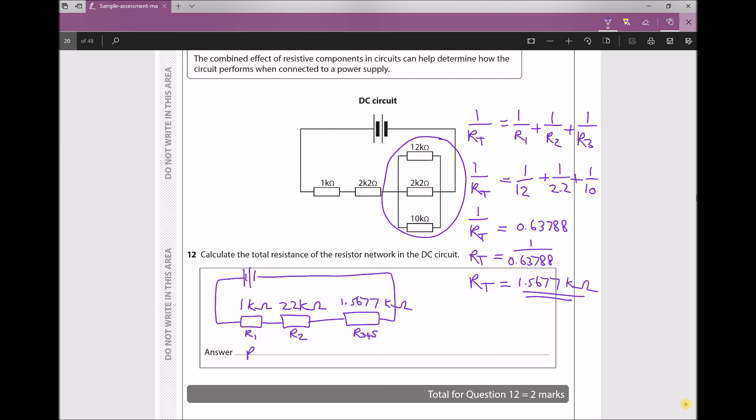And I can say that RT, the total, is just R1 plus R2 plus R3, 4, 5, the sum of the series resistors. And that will give me 1 plus 2.2 plus 1.5677, which equals a total of 4.7677. And my units for that are kiloohms. Thank you.